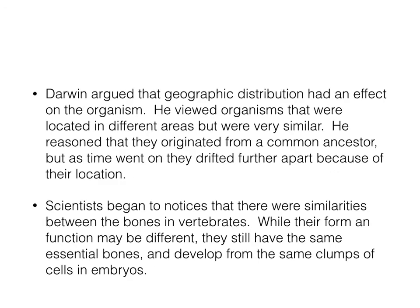Darwin argued that geographic distribution had an effect on the organism. He viewed organisms that were located in different areas but were very similar. He reasoned that they had originated from a common ancestor, but as time went on they drifted further apart because they were separated by location.